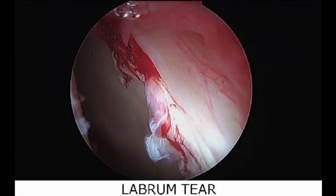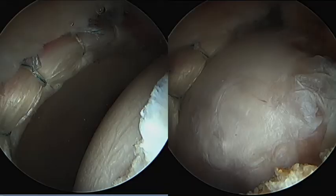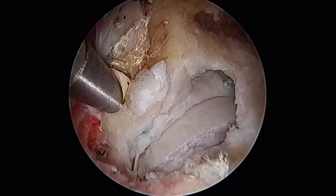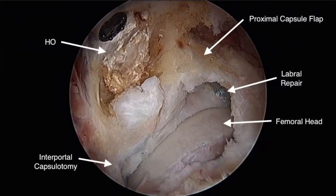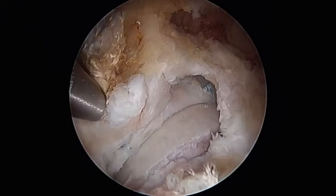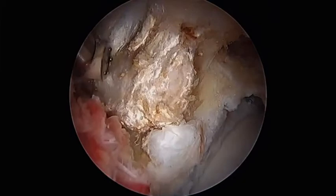Oftentimes the HO does not restrict access to the central compartment, so labral repair and addressing intraarticular pathology is possible, as would be done with a standard hip arthroscopy. Once central compartment work is complete, the hip is taken out of traction, and the RF device is used to carefully dissect the HO free from surrounding tissue. The radiofrequency ablation device is directed toward the HO fragment to minimize the amount of surrounding tissue removed.